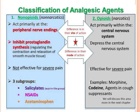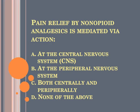Non-opioid analgesics are not effective for severe pain. Sometimes they are exactly what a patient needs, and later on we'll discuss opioid or narcotic analgesics in another chapter. Quick question: pain relief by non-opioid analgesics is mediated via action at the peripheral nervous system — that's answer B.